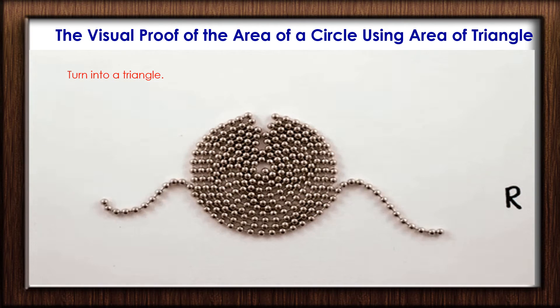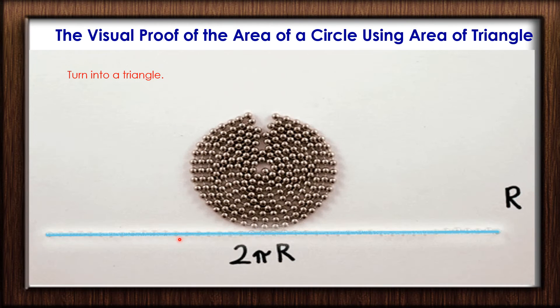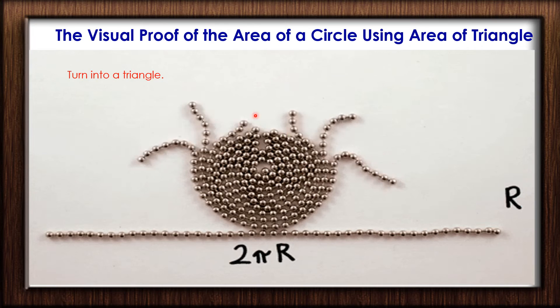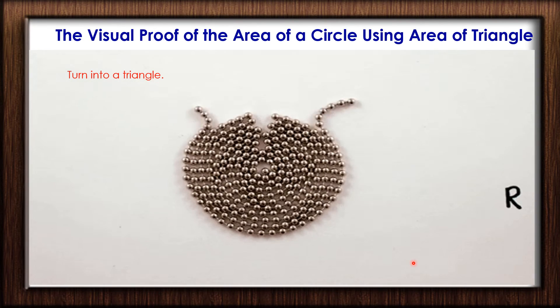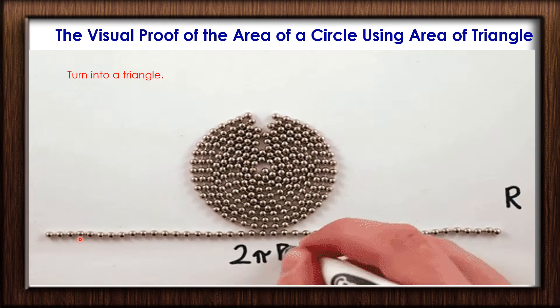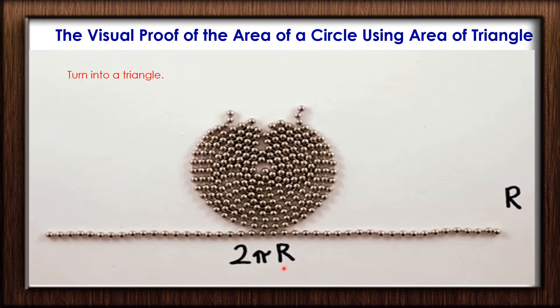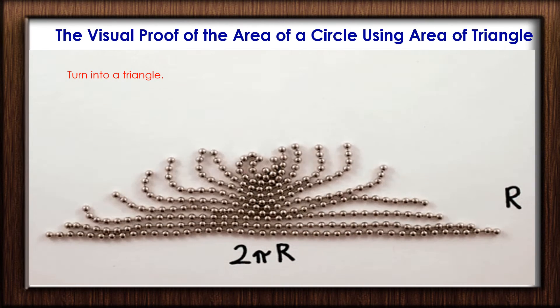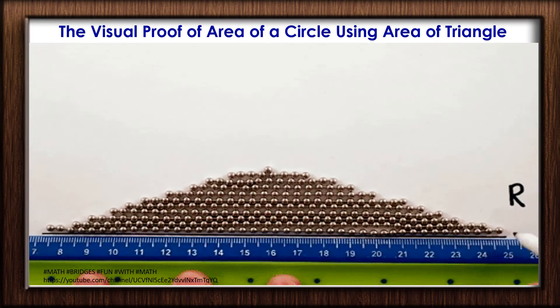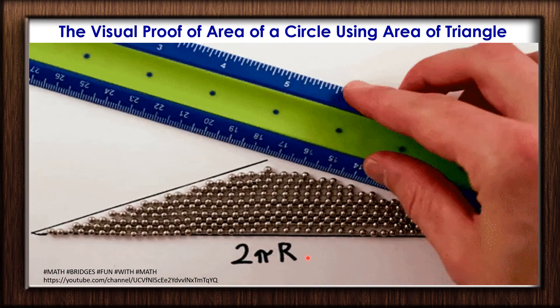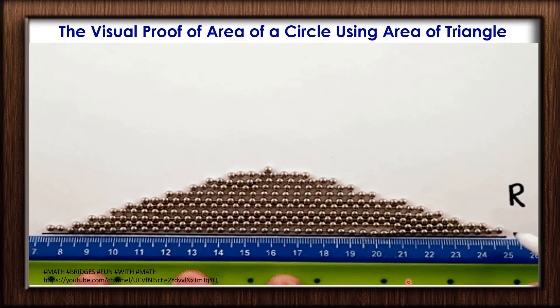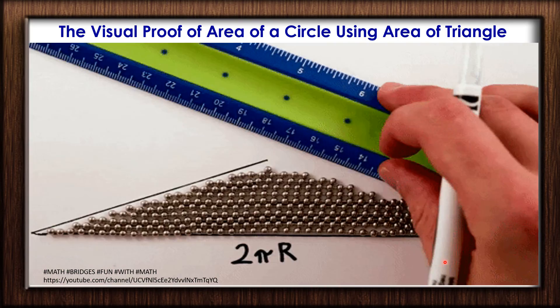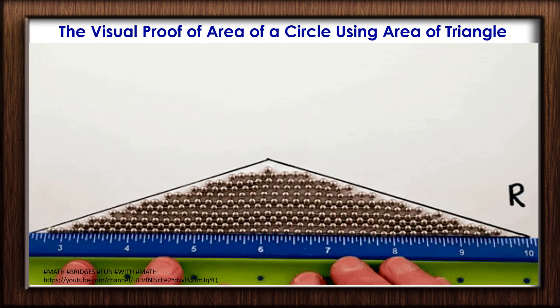Now we will open all the strings. You can see here the outer part is known as the circumference of the circle, which is 2πr. You can see here the open beads formed as a triangle. Using a scale, you can draw a triangle like this. The base is 2πr and the triangle has been formed.